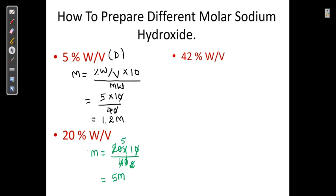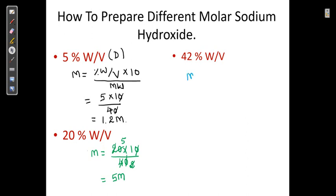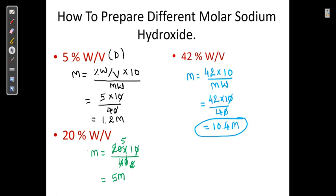Similarly for the strong solution: M = 42 × 10 divided by 40. That is 42 × 10 divided by 40, which gives approximately 10.4 molar. In the pharmacopoeia, the three strengths are written as diluted solution, sodium hydroxide solution, and strong solution.